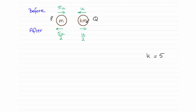We're also told that they're moving in opposite directions before they collide. So that means you can see their directions given by the arrows here. We're told that the speed of p is 5u and the speed of q is u.